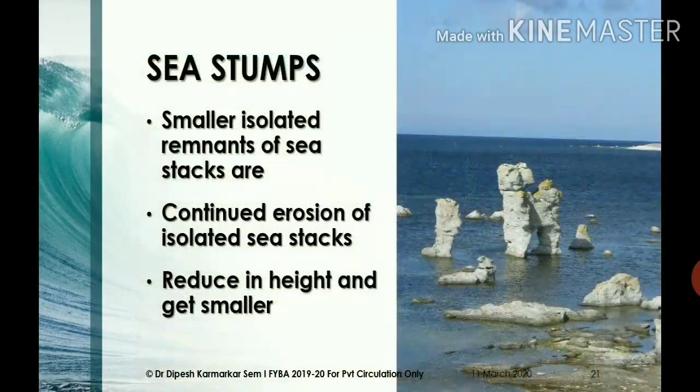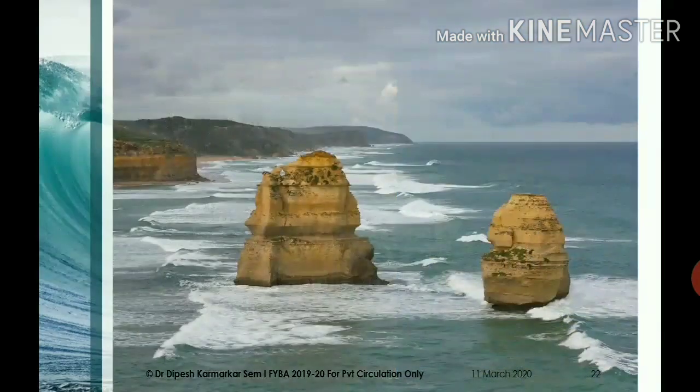Sea stumps are isolated sea stacks that continue to erode due to sea wave action. As a result, they reduce in height and get smaller and smaller. Such smaller isolated remnants of sea stacks are called sea stumps.